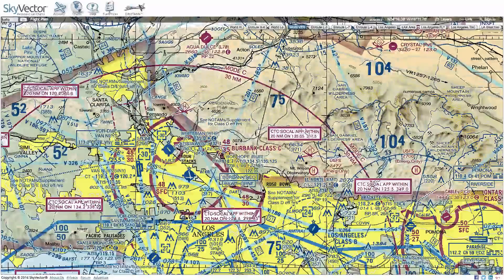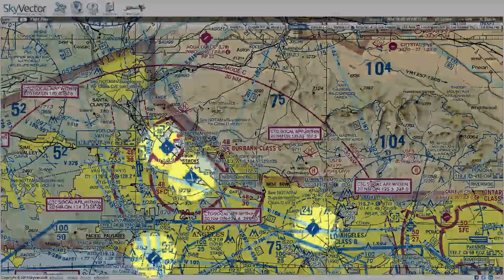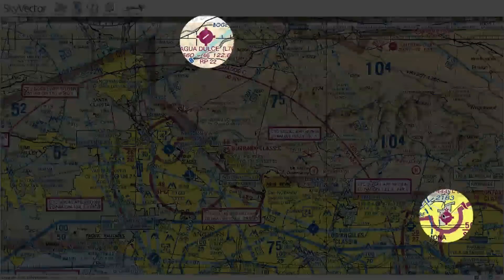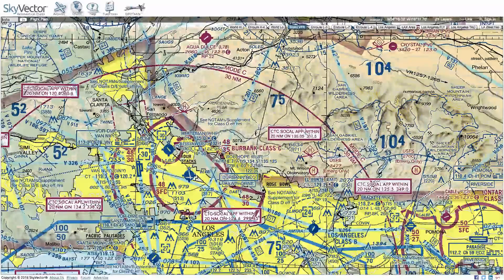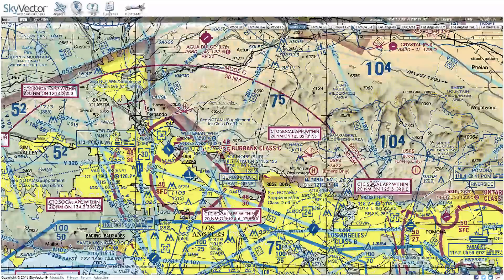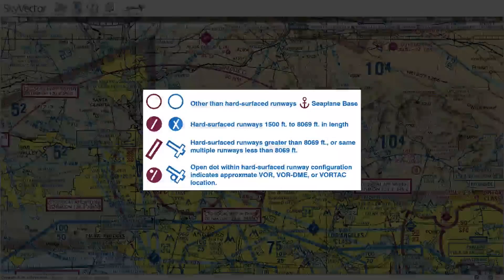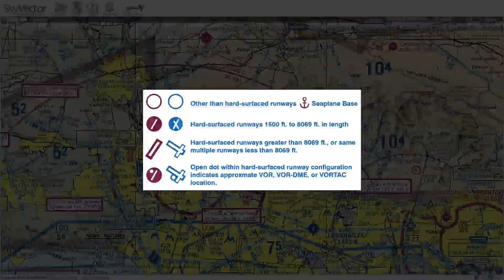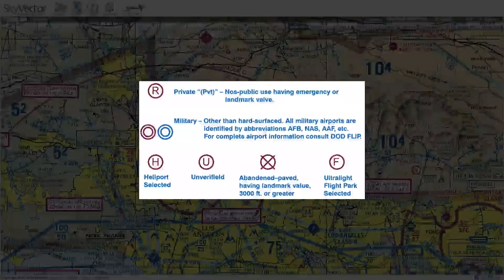Airports are shown in different colors. Airports shown in blue have a control tower, and airports shown in magenta do not have a control tower. There are many different types of airports, dictated by the types of runways. Hard surface runways are generally 1,500 feet to 8,069 feet, with others longer than that. There are also private airports, military, and abandoned airports.